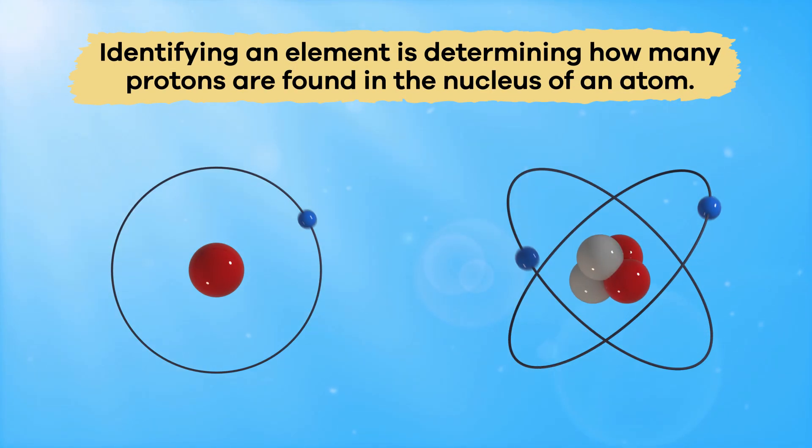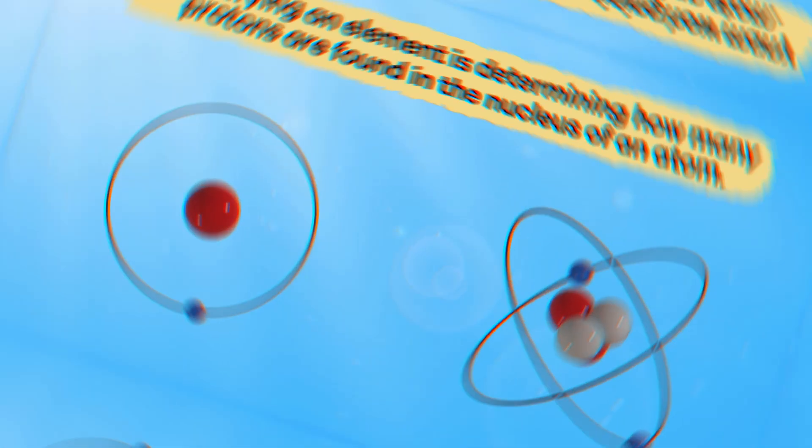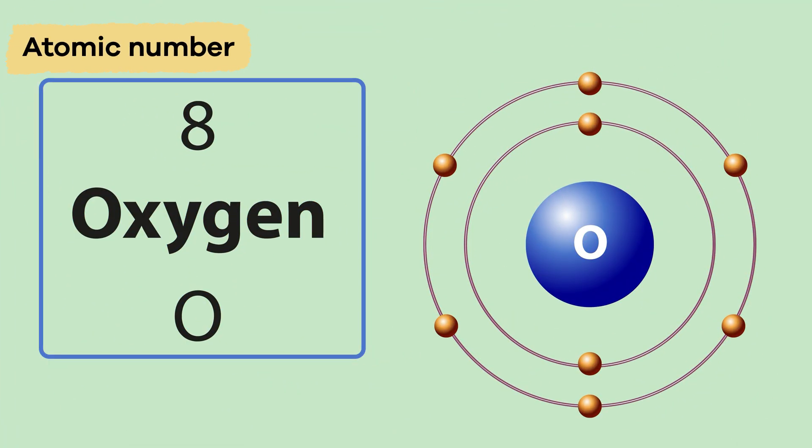The first step to identifying an element is determining how many protons are found in the nucleus of an atom of that element. This is called an atomic number.